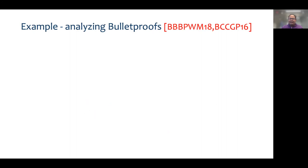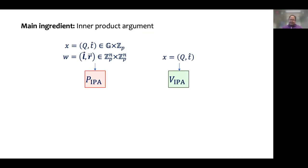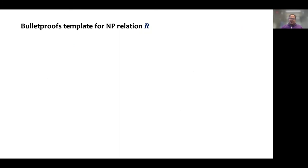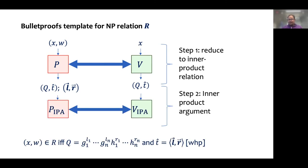Finally, I would like to give a high-level idea of how we instantiate our framework for specific protocols through the example of bulletproofs. This is a complicated protocol. It turns out, however, that to understand some of our basic ideas, you do not need to understand all the details of how bulletproofs work. The main ingredient in bulletproofs is an elegant inner product argument. For this argument, the input is a group element Q and a scalar T-hat. The prover proves knowledge of two vectors L and R, such that Q is a commitment to L and R, and the inner product of L and R is T-hat. In all instantiations of bulletproofs to prove knowledge of a witness for an NP relation, we reduce this to an instance of the inner product argument and then run the inner product argument on that particular instance.